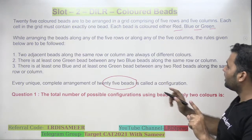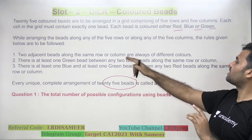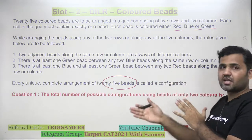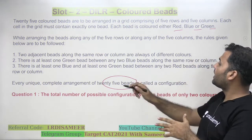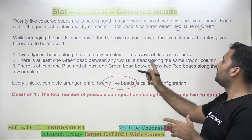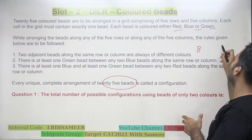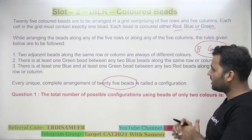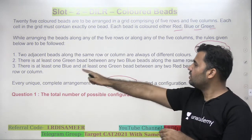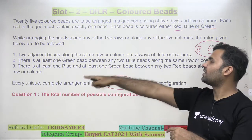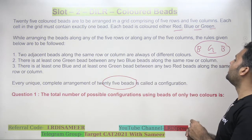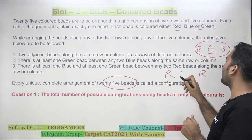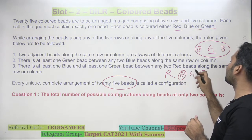The three conditions are: first, two adjacent beads along the same row or column are always of different colors. Second, there must be at least 1 green between any 2 blue beads. Third, between any 2 red beads, there must be at least 1 blue and at least 1 green.